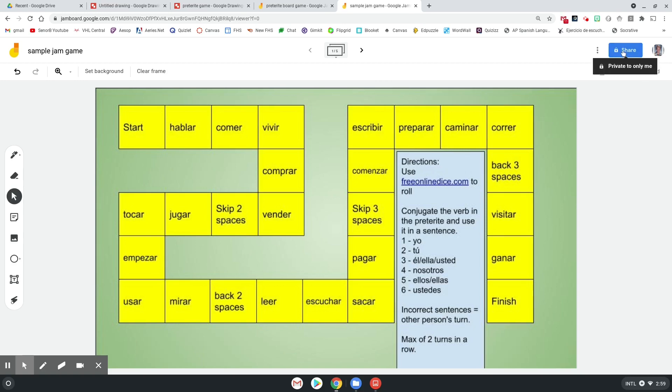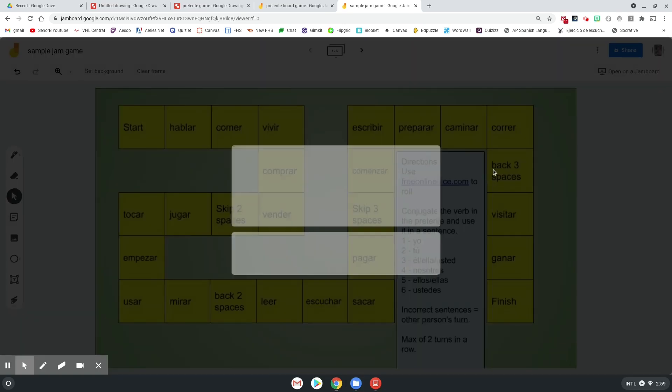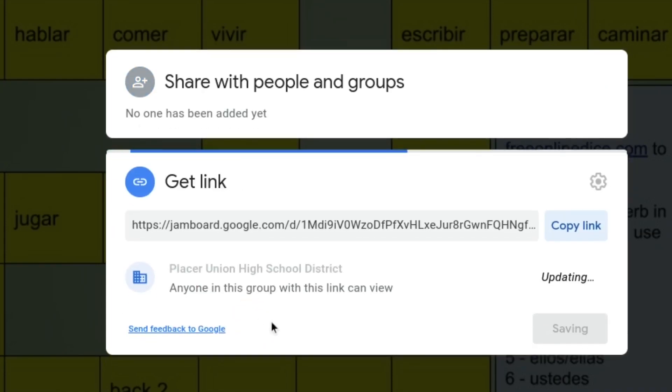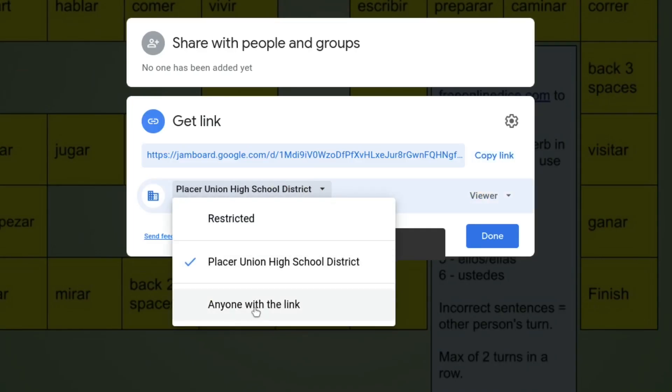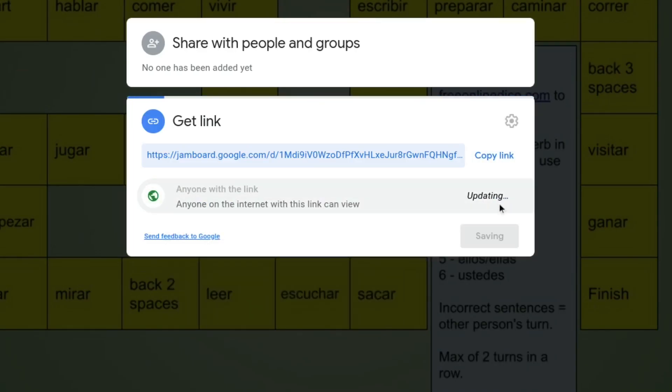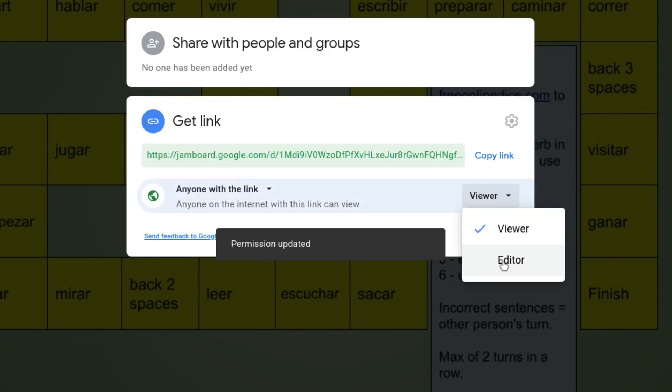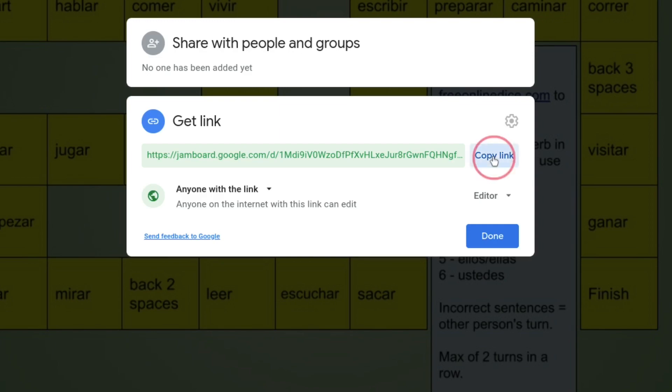So to do that, over here on the share, I'm going to click share. I'm going to change this to anyone with the link can edit. And then I'm going to copy that link.